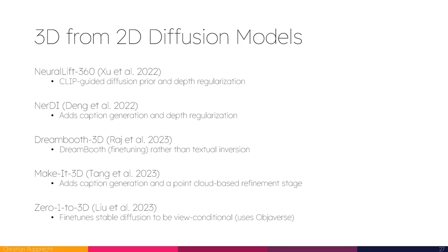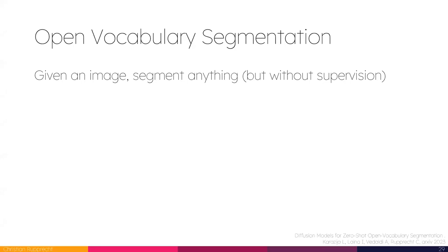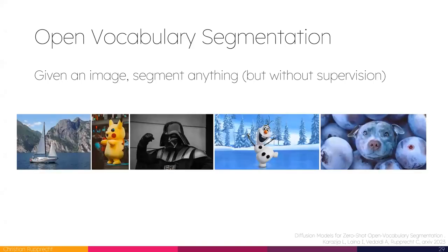The final part of the talk is on the third way to exploit generative models: using them to generate training data for our algorithms. This is something that has only started to work now that we have really good image generators. One interesting direction I've been looking at is open vocabulary segmentation — the task of, given an image, segmenting anything. In this setting, you are given an image and a user tells you what they want segmented, whether that's normal things like boat, water, sky, or very specific things like Darth Vader.